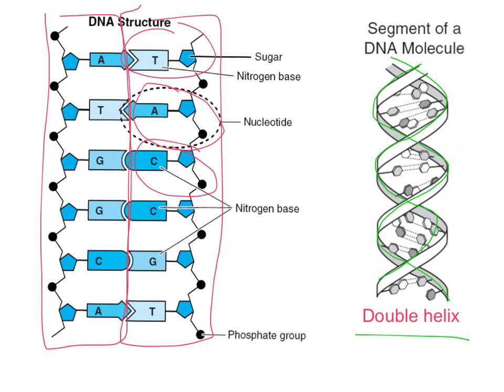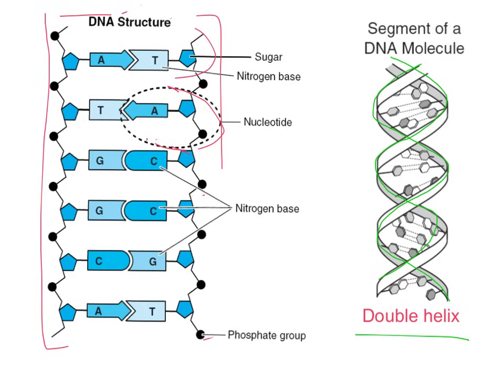That genetic information — which protein we're going to code for — is all based on the order of those nitrogen bases in the middle. The fact that the sequence is A, T, G, G, C, A will determine which particular amino acid it codes for. Our proteins are made up of amino acids, so the order of those nitrogen bases is very important to actually carrying the information.